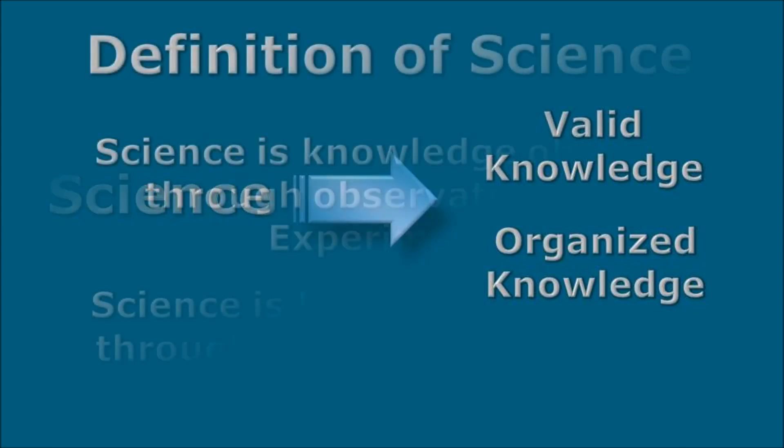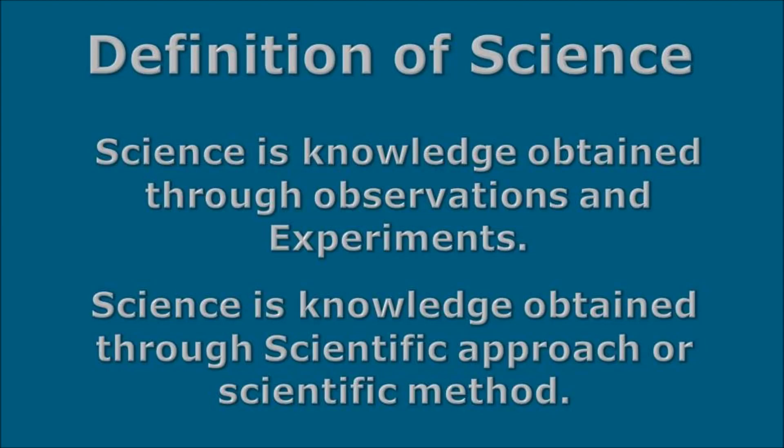By definition, we can define science as the knowledge we obtain through observations and experiments. In other words, we can say that science is the knowledge obtained through a scientific approach or scientific method.